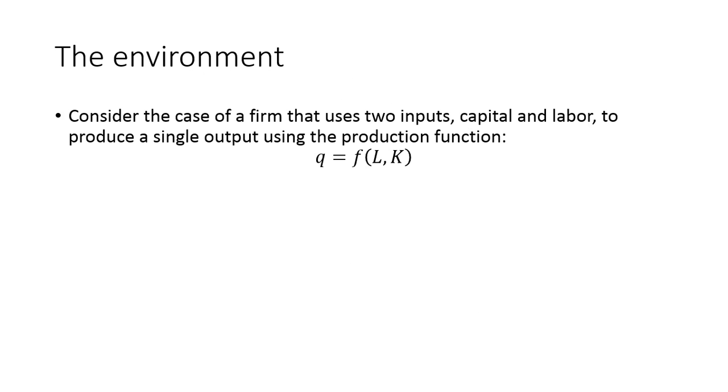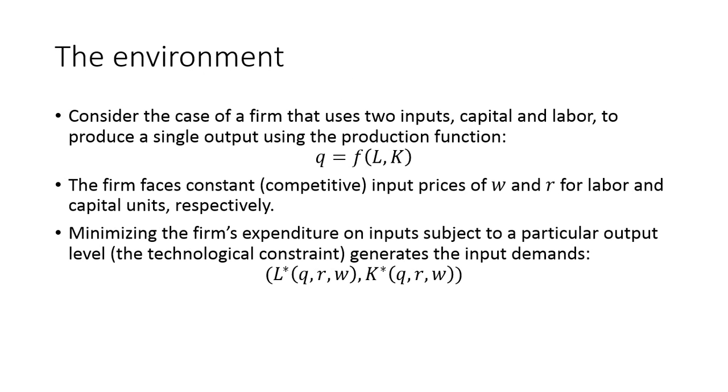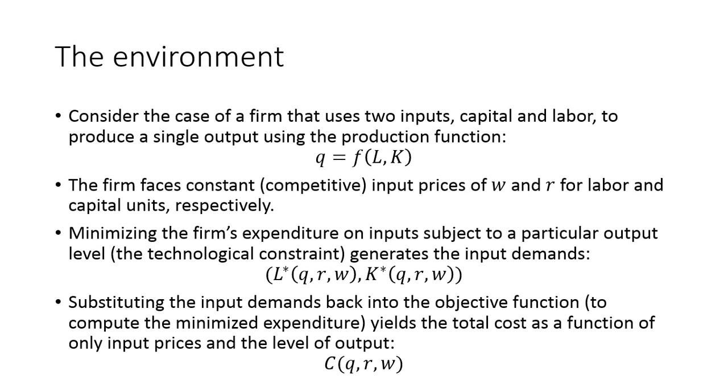So here's our environment. We're producing one output using two inputs. We face constant input prices for each input. When we minimize our expenditure on these inputs subject to the technology constraint, we're able to generate our input demands. When we substitute these input demands back in the objective function, which was the minimized expenditure, this was the way we were able to recover the total cost function as a function of output and input prices.